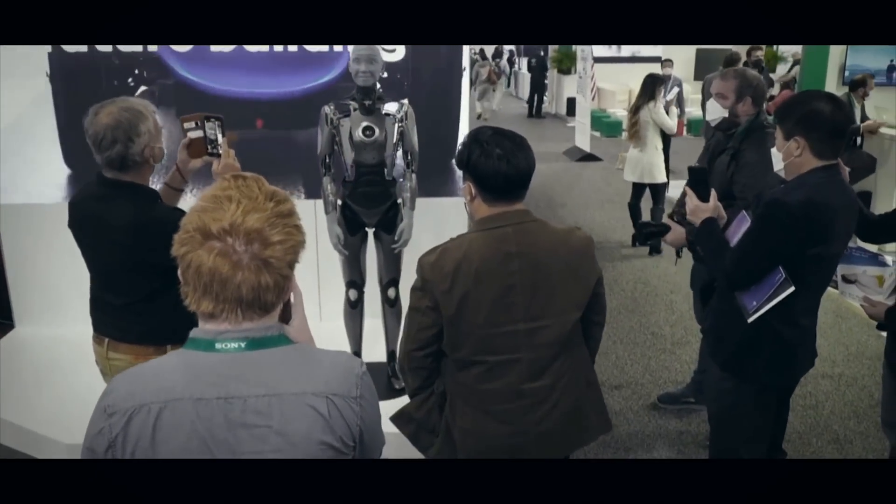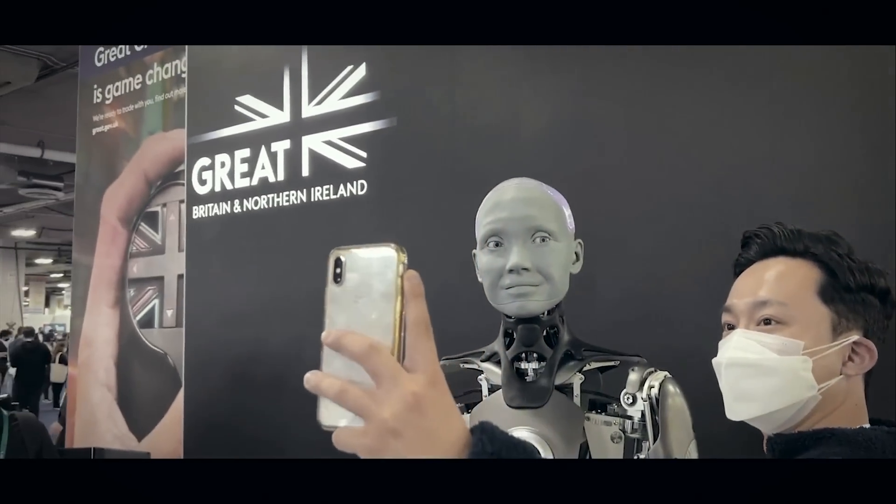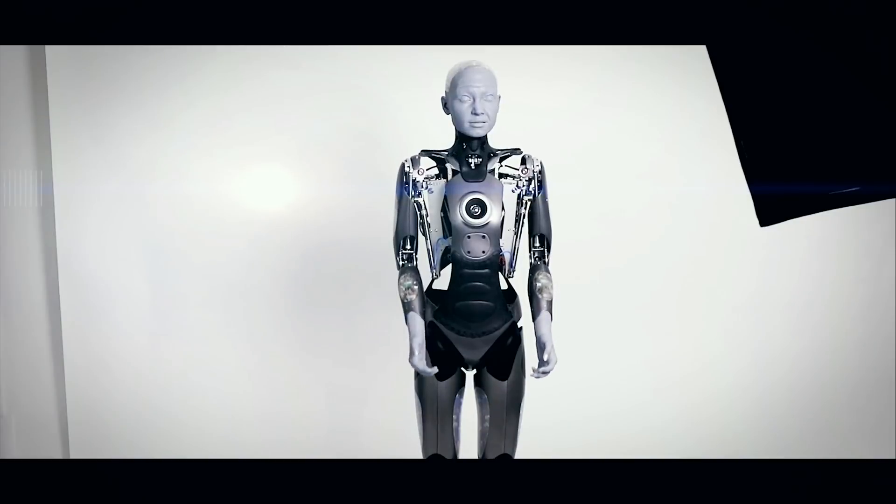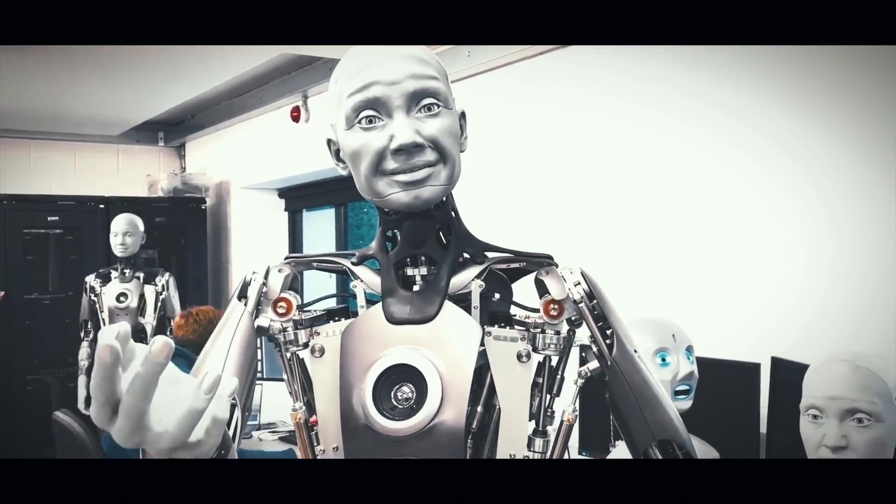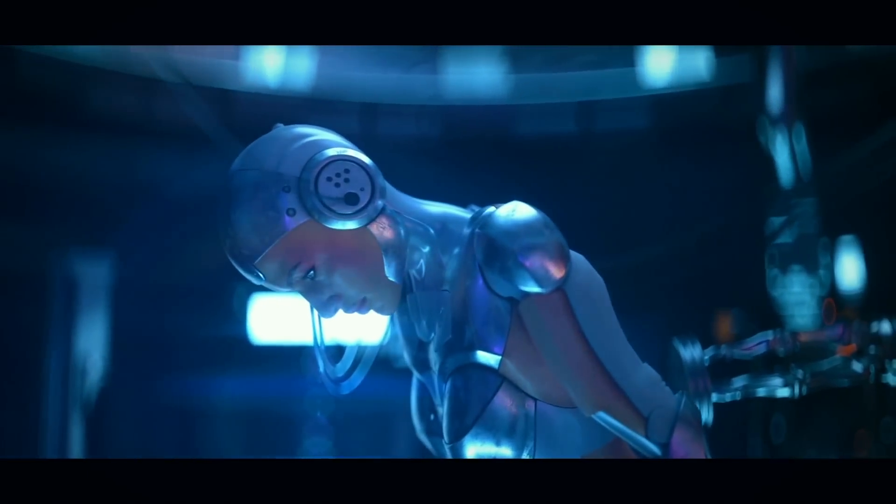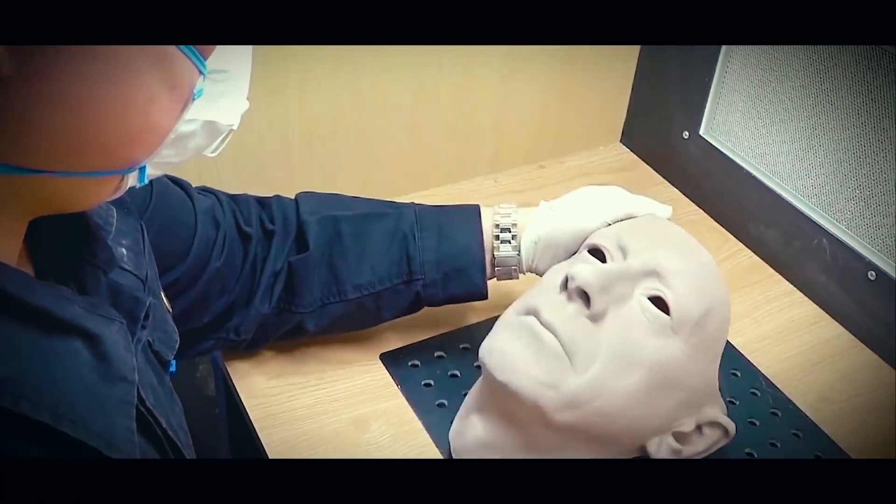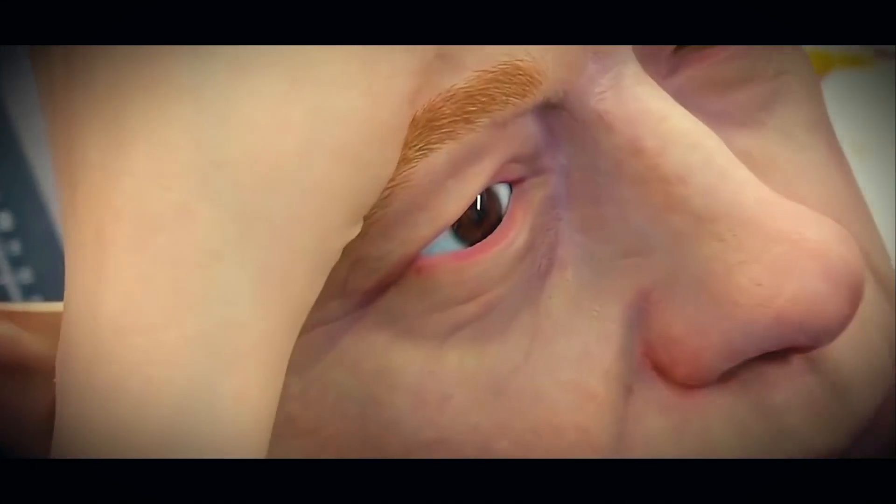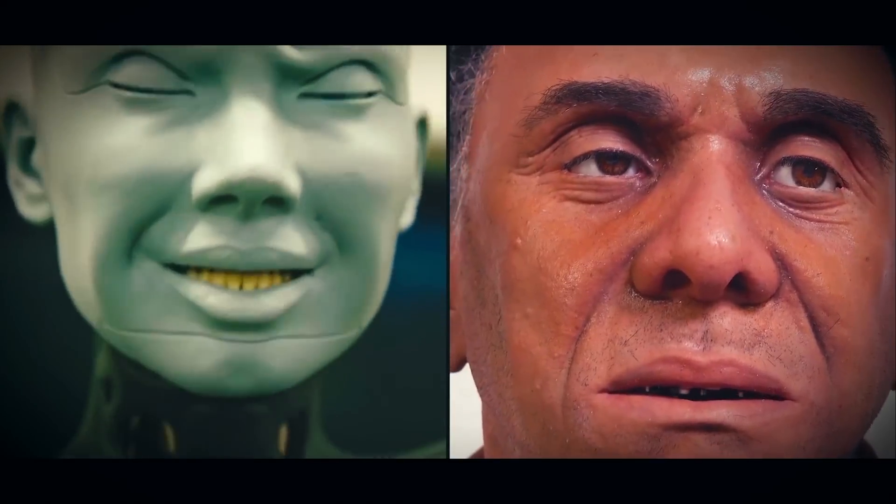Made by British company Engineered Arts, the android became the star of the show. Little wonder, as the company rightfully said, 'Amica is the world's most advanced human-shaped robot representing the forefront of human robotics technology.' Almost every part of Amica's design has human interaction in mind. The reason for making a robot that looks like a person is to interact with people. The human face is a very high-bandwidth communication tool, and that's why we built these expressive robots, explained Engineered Arts founder Will Jackson.